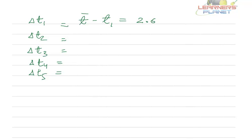The second part is to find out errors in the individual observation. That means we have to find out delta t1, delta t2, delta t3, delta t4 and delta t5, which is nothing but the mean value minus the individual value. So, the first value, the mean value is 2.62 which we just calculated minus first value is 2.63. So, it is minus 0.01.